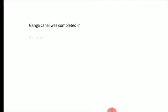Ganga canal was completed in — Option A: 1820, Option B: 1880, Option C: 1856, Option D: 1884. Answer is Option C, 1856. The Ganga canal was completed in 1856.